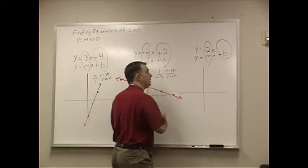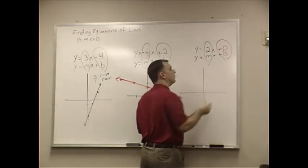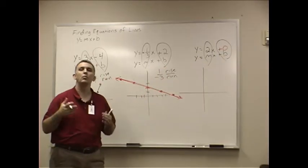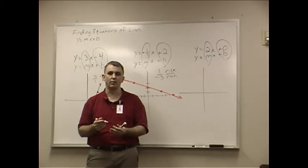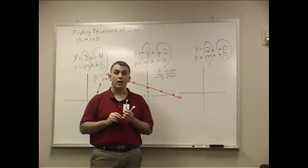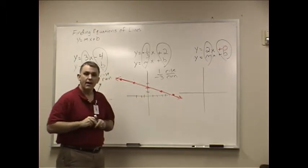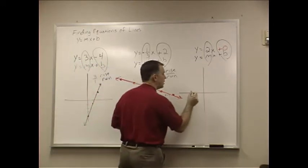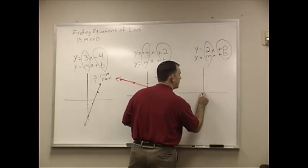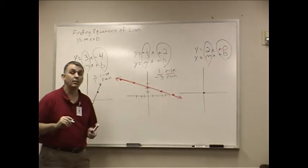Because we wouldn't bother writing plus 0. We just let that fall away, don't we? But it is there. So if the b value is 0, that means that I'm up 0 on my y axis. That means it's the origin.